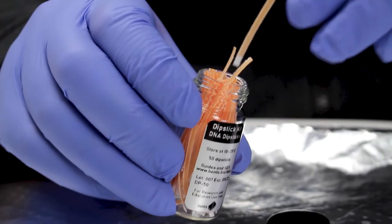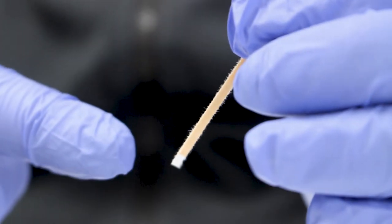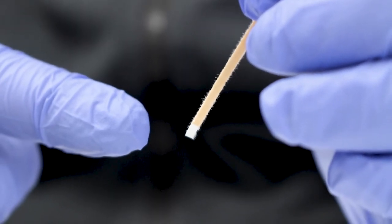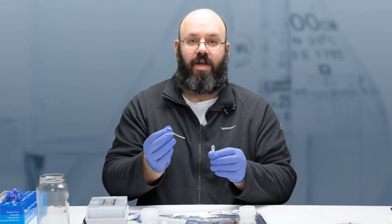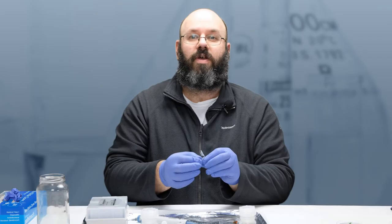The dipstick has a cellulose binding zone at one end. This is where the DNA will bind to the dipstick. Capture the DNA by dipping this end in the extraction buffer three times. You want the binding zone to be completely soaked.